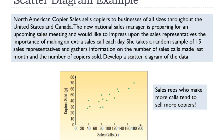Based on this scatter diagram, it seems reasonable for the manager to tell the sales force that the more sales calls they make, the more copiers they can expect to sell — which is important for employees working on commission. However, it's critical to note that while there does seem to be a positive relationship between the two variables, not all points fall on the line.